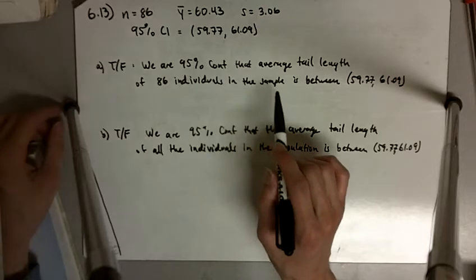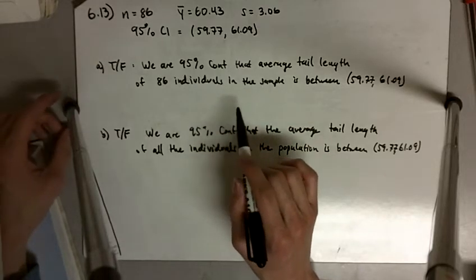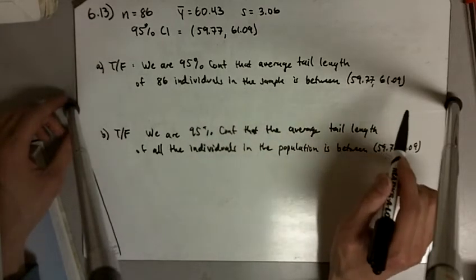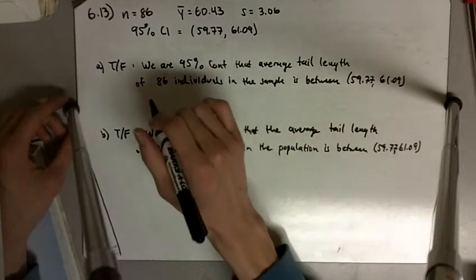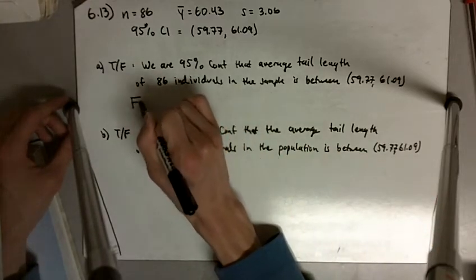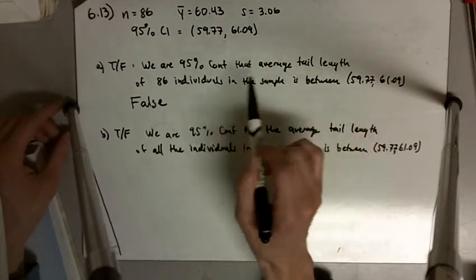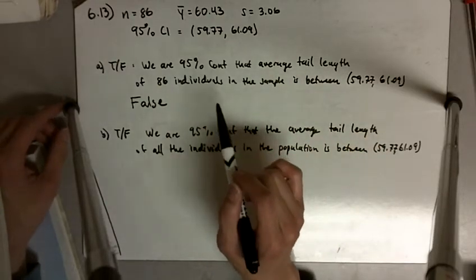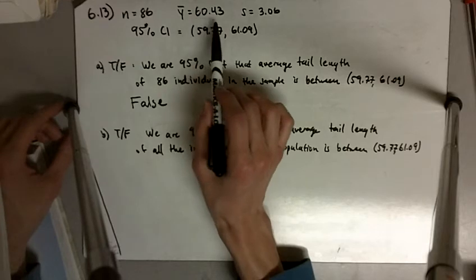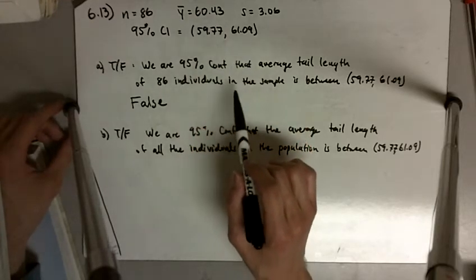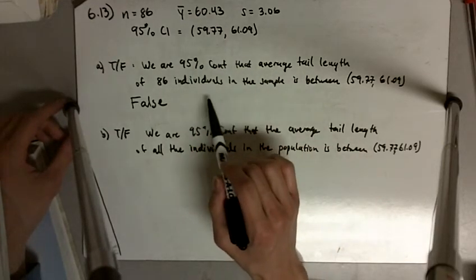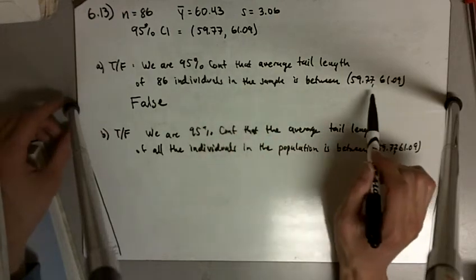This is false. The average tail length of the 86 individuals we know is 60.43. We know that; that's a fact because the average tail length is just given to us, so of course we're 100% confident.